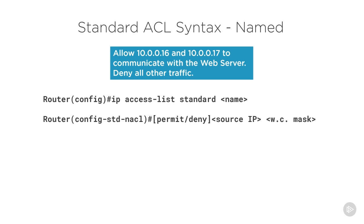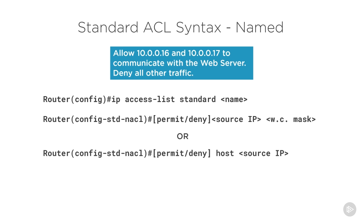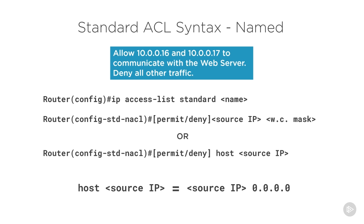Looking at the access control list line, we have permit or deny, then we list the source IP address and then the wildcard mask. The alternative is to use the word 'host', which means one single IP address, followed by that IP address. Using 'host' and then the source IP is exactly the same as source IP with a wildcard mask of 0.0.0.0. If we add all zeros to any address we get the same address, so these are identical.